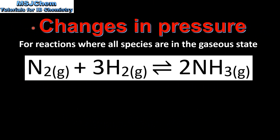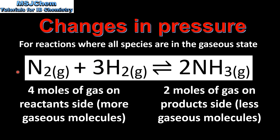Next we'll have a look at changes in pressure — this is for reactions where all the species are in the gaseous state. Here we have the equation for the Haber process, in which nitrogen reacts with hydrogen to form ammonia in the forward reaction, and in the reverse reaction ammonia decomposes to form hydrogen and nitrogen. We have to take into account the number of moles of gas in the reactants and the products. On the reactant side we have 4 moles of gas; on the product side we have 2 moles of gas.